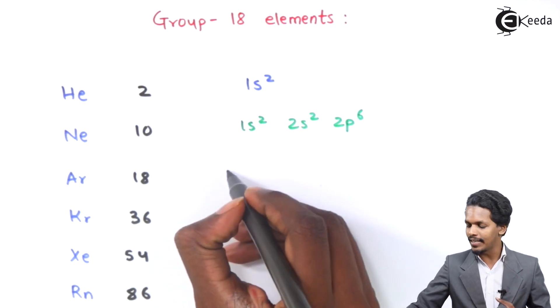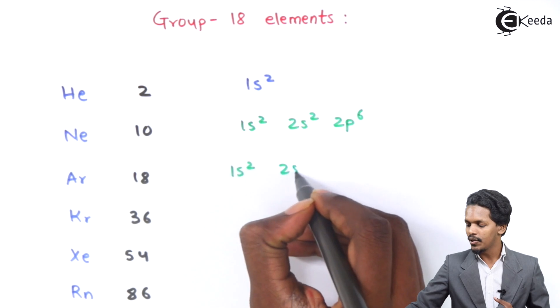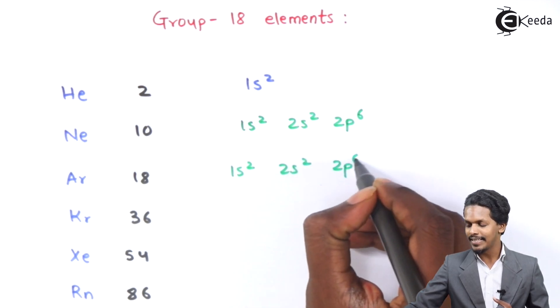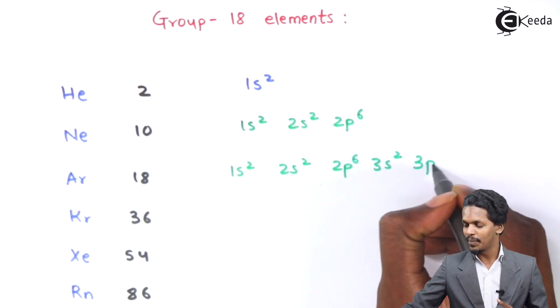And for Argon 18, we can write it as 1s2, 2s2, 2p6, 3s2, 3p6.